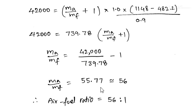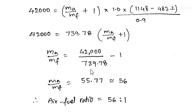So the air-fuel ratio MA/MF = 55.77, where MA is air and MF is fuel. We can write the air-fuel ratio directly as 55.77:1. Rounding off, the air-fuel ratio is approximately 56:1. This is the way to solve this kind of question.